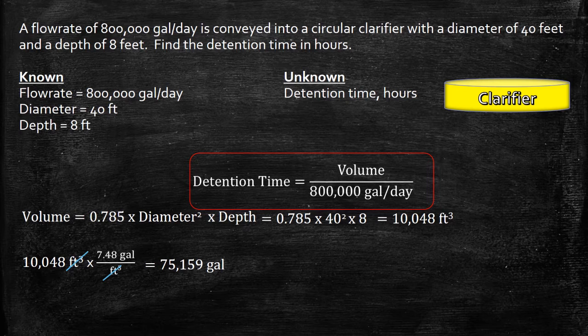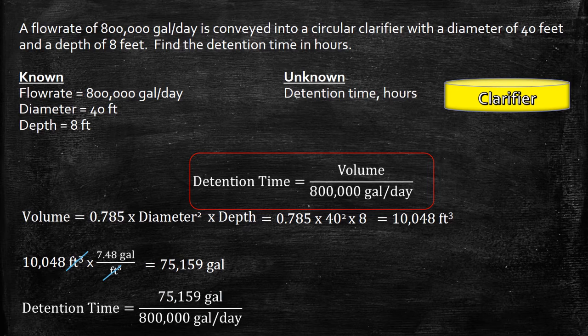Now we can take this volume and plug it back into the detention time formula. Detention time equals 75,159 gallons divided by the flow rate of 800,000 gallons per day. The gallons cancel out.